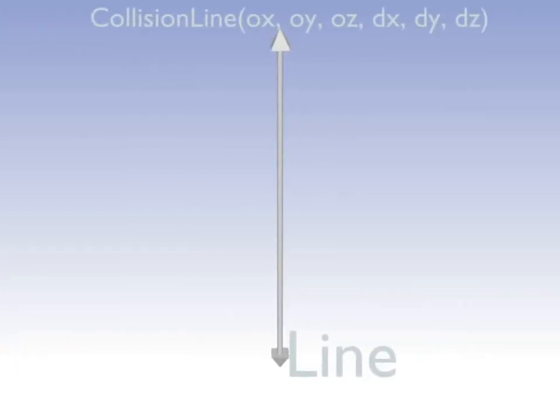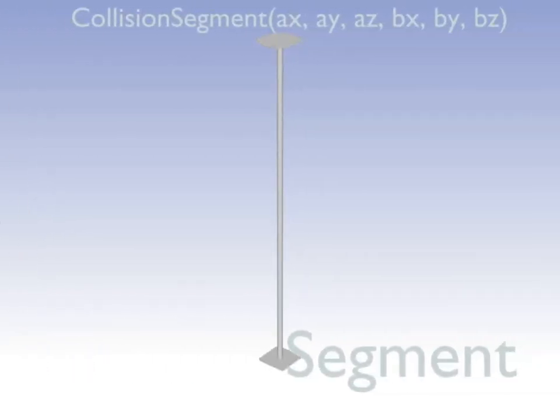Line is the same as ray except it extends from both sides to infinity. Segment is also the same as ray except it's not infinitely long. It can be useful when you only want to collide with something which is not further than the ray length.